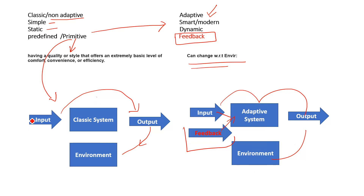Simply, the classic system is just like a robot — if we feed a robot one thing, it will perform only one thing. But the adaptive system is like a human: we change according to the environment. Same thing here — the adaptive system gives output with respect to the environment, whereas whatever we feed into the classic system, we will get the same output. This is the basic difference between the classic and the adaptive.